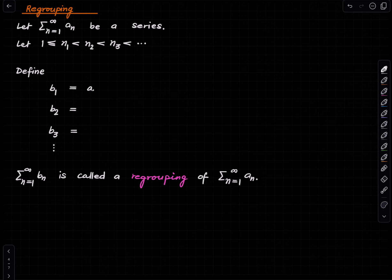You start with index 1 and go up to n₁. Then you sum up the next terms of the original series up to n₂, starting with the n₁ plus 1 term and going up till n₂.